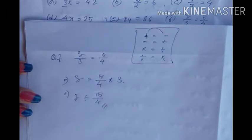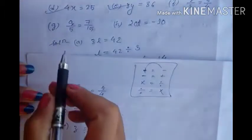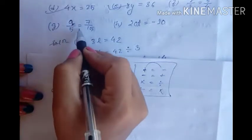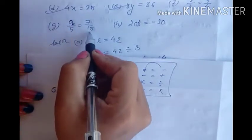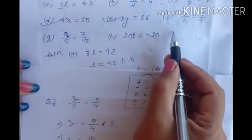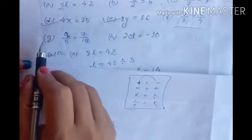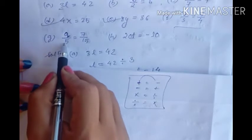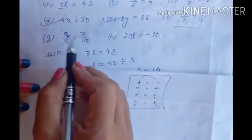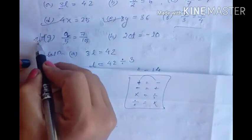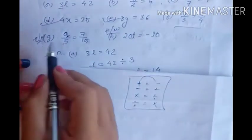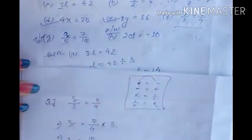Question G: Q upon 9 equals 7 upon 15. This is the same as question F. You will transpose 9 to the right hand side — here it is divide so it becomes multiply. Questions G and H will be your homework.